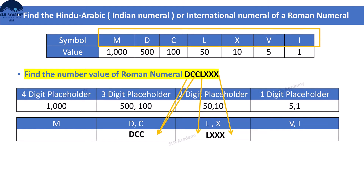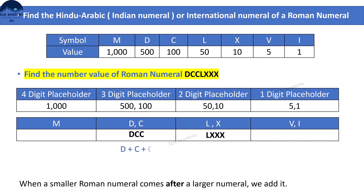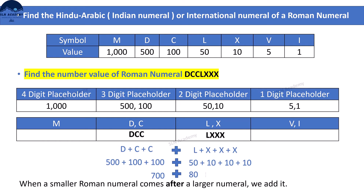Divide the given Roman numerals and arrange them into these groups. Here, D equals 500, which is larger than C which is 100. When a smaller Roman numeral comes after a larger numeral, we add it. So we add them. In the same way, L equals 50, which is larger than X which is 10. Here also the smaller number came after the larger number, so we add them. The total value came as 780. So the number value of Roman numeral DCCLXXX is 780.